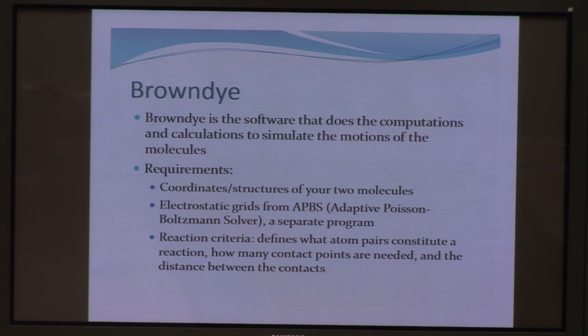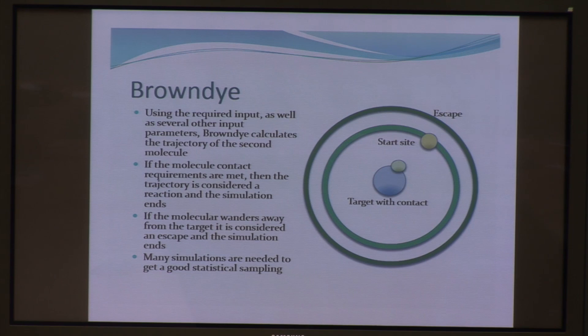As Gary described earlier, you have your substrate at a start site, and then if it goes in the wrong direction and leaves, it either escapes or you restart, and if it goes and hits your target, then you have a reaction. I performed many simulations in order to get a good statistical sampling, and I used the single trajectory method.